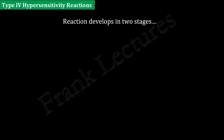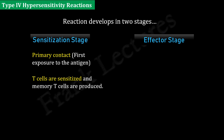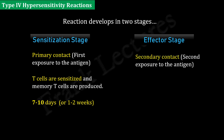Like all other hypersensitivity reactions, type 4 hypersensitivity also develops in two stages: the sensitization stage and the effector stage. The sensitization stage refers to the first or primary contact with the antigen, during which T-cells are sensitized and antigen-specific memory T-cells are generated — a period of 7 to 10 days. The effector stage refers to secondary or subsequent contact with the antigen, during which host tissue damage takes place, apparent only after 1 to 2 days of second exposure.